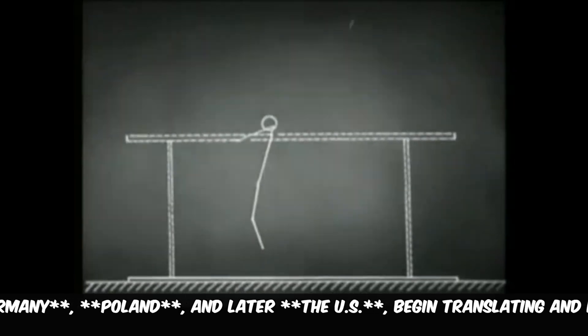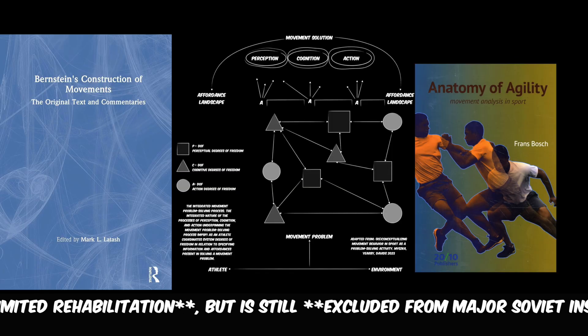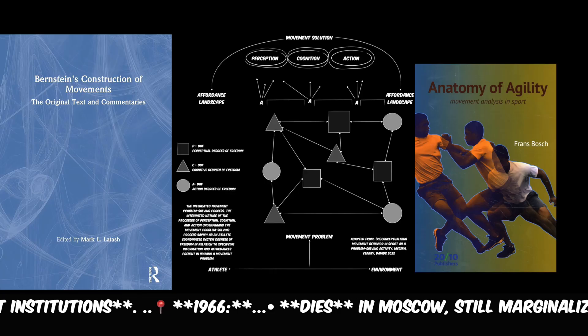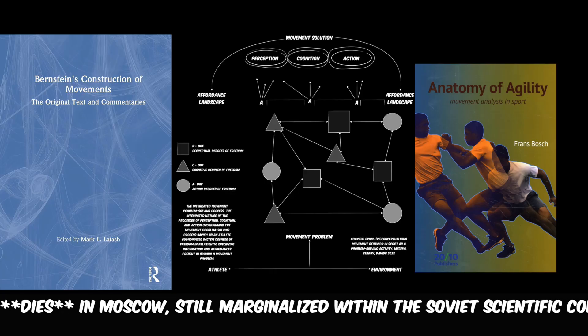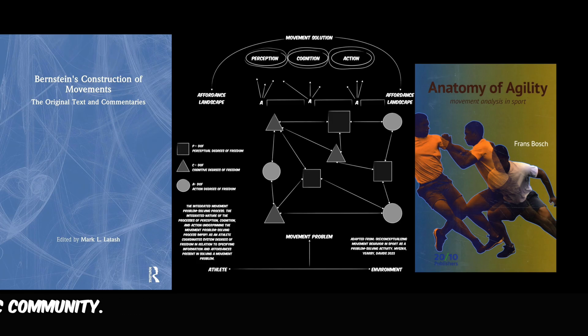In the 1960s — his final years — Bernstein began to receive foreign recognition, becoming more appreciated outside the USSR, especially in Eastern Europe and eventually the West. Western scientists, particularly in Germany, Poland and later the US, began translating and integrating his ideas. Late in life Bernstein enjoyed some limited rehabilitation, but was still excluded from major Soviet institutions. He died in Moscow in 1966, still marginalized within the Soviet scientific community.